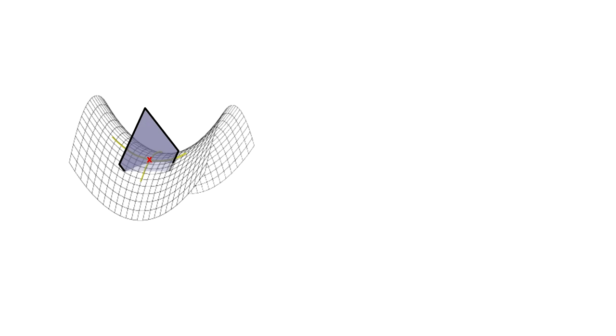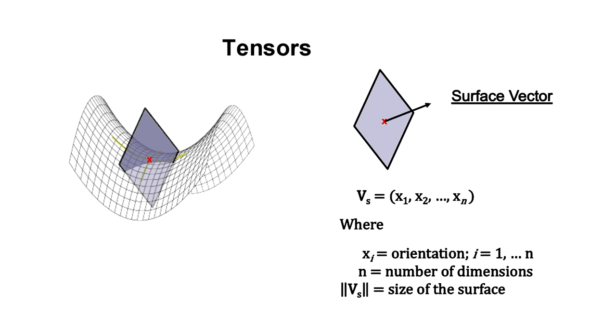We can also construct a surface for each dimension. Each surface has a size and an orientation. We can use vectors to mathematically represent the size and orientation of the surfaces.